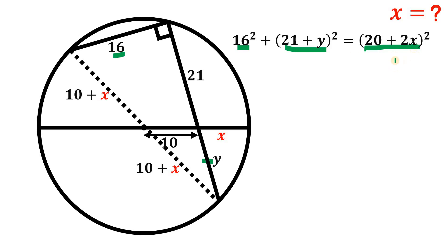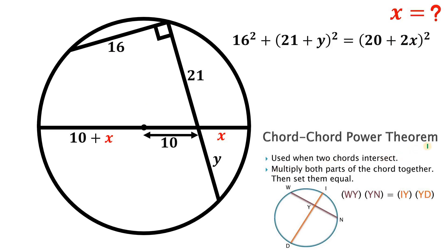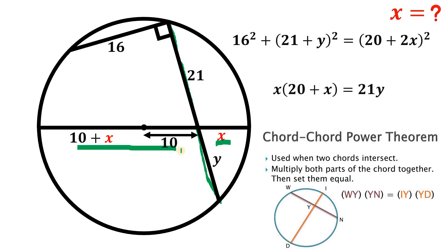To solve for two variables we need another equation that consists of x and y. Using the chord-chord power theorem — if two chords intersect inside the circle, we multiply both parts of each chord and set them equal. So we can say that x times (20 plus x) equals 21 times y.